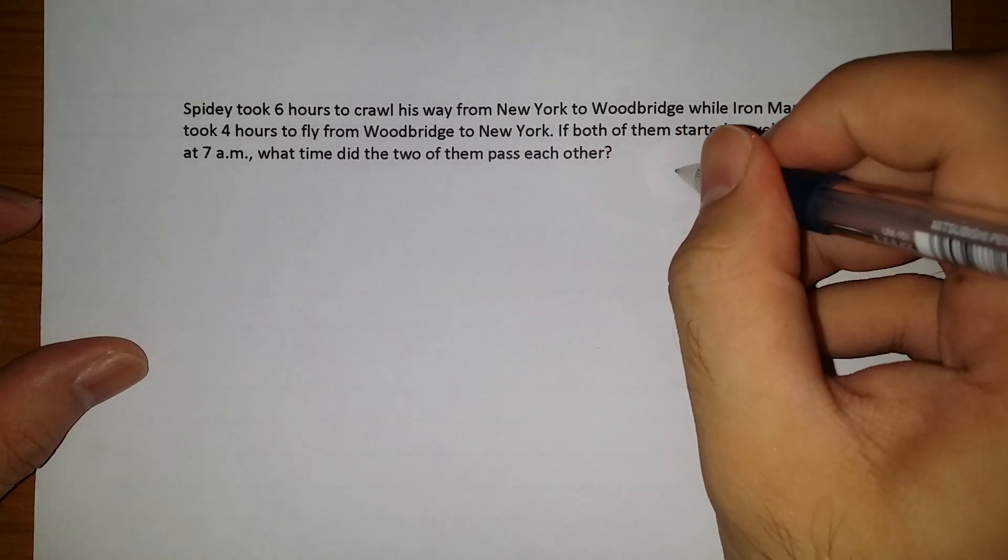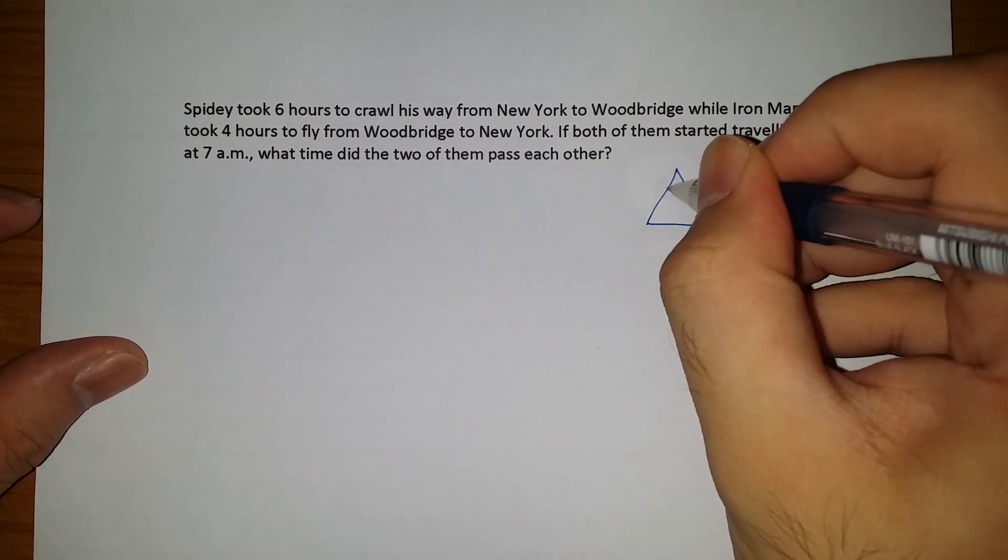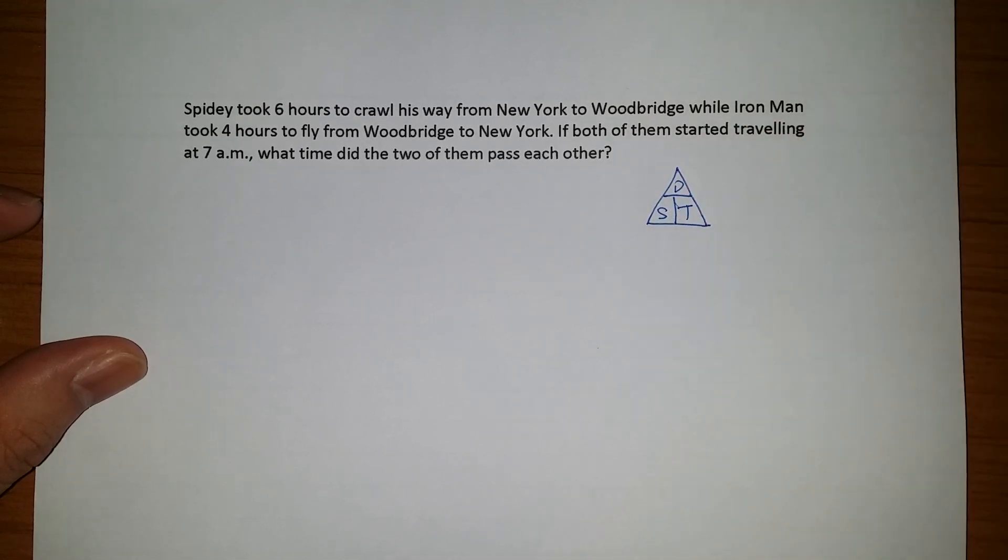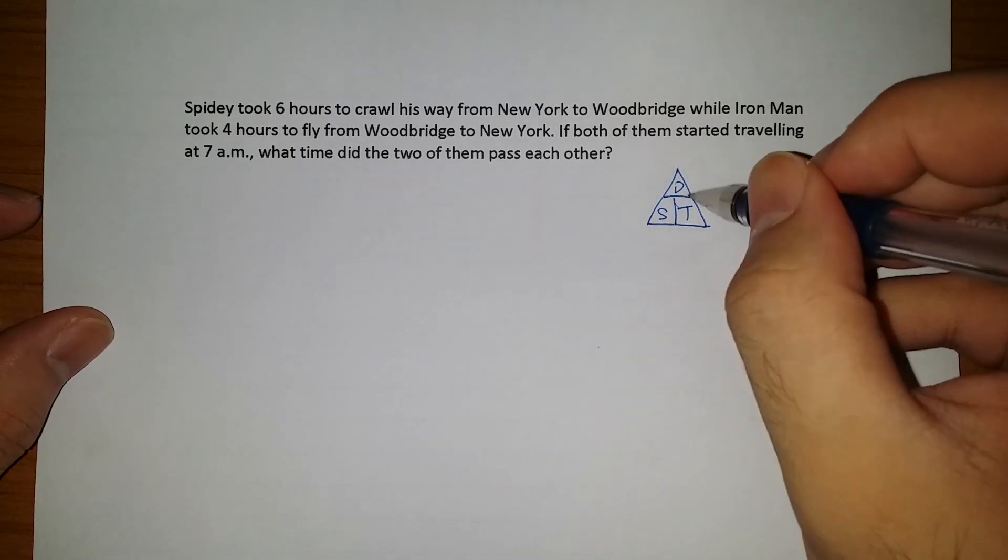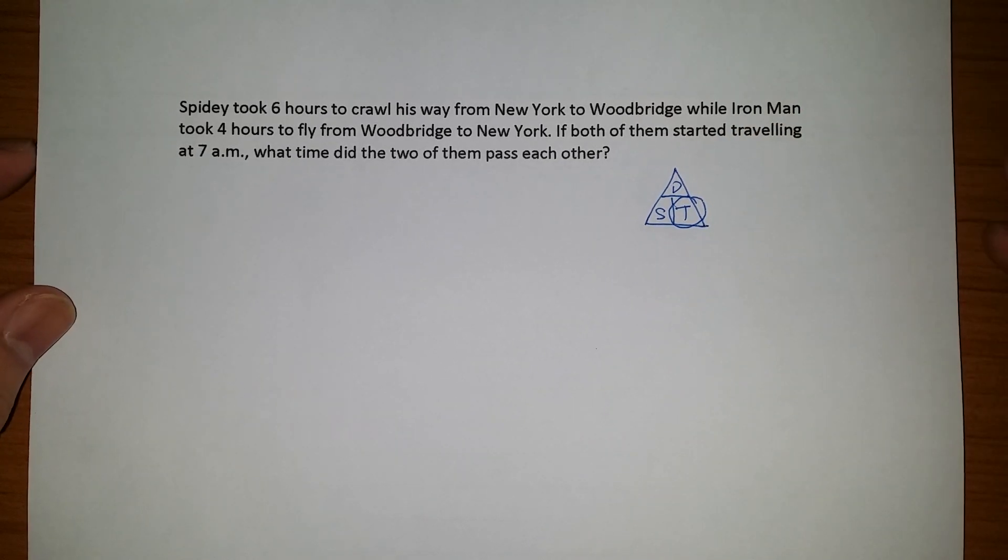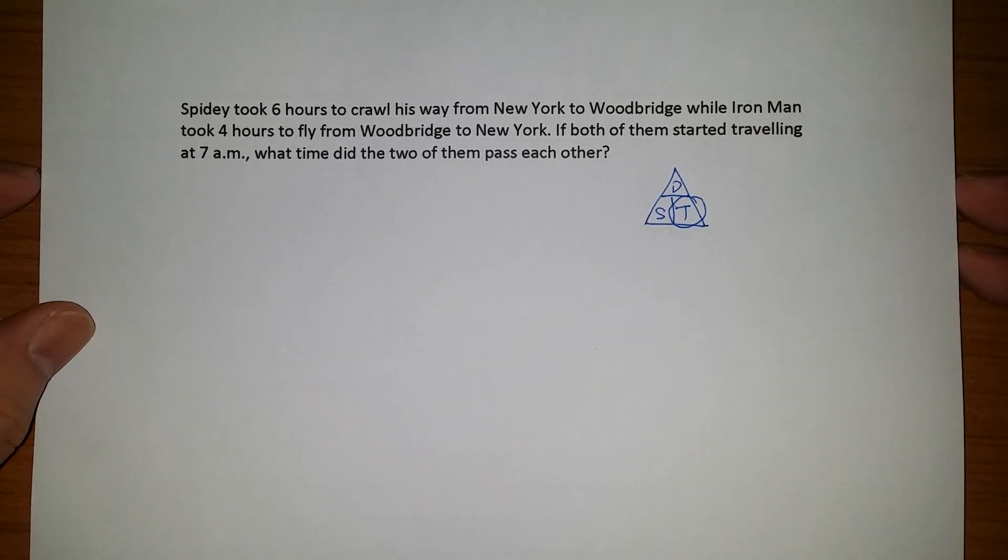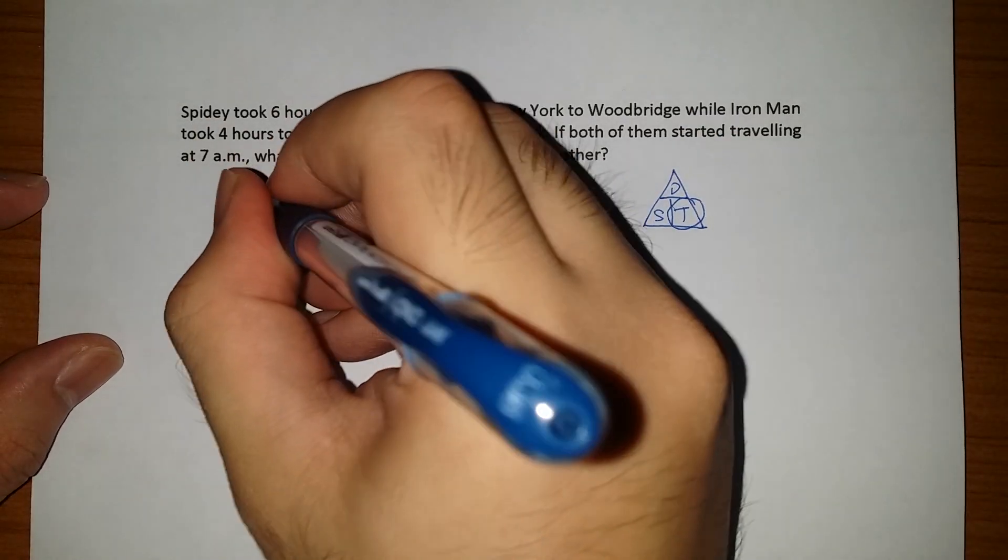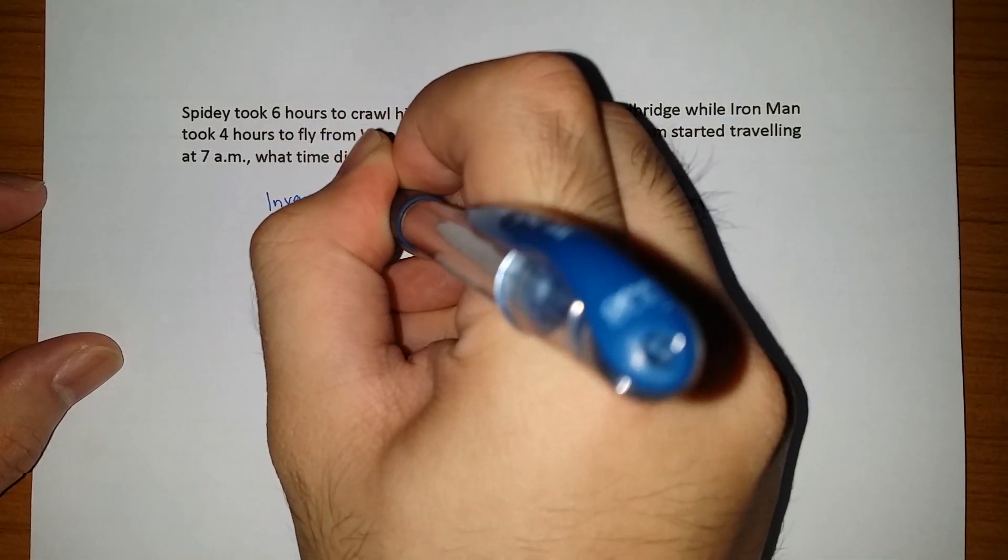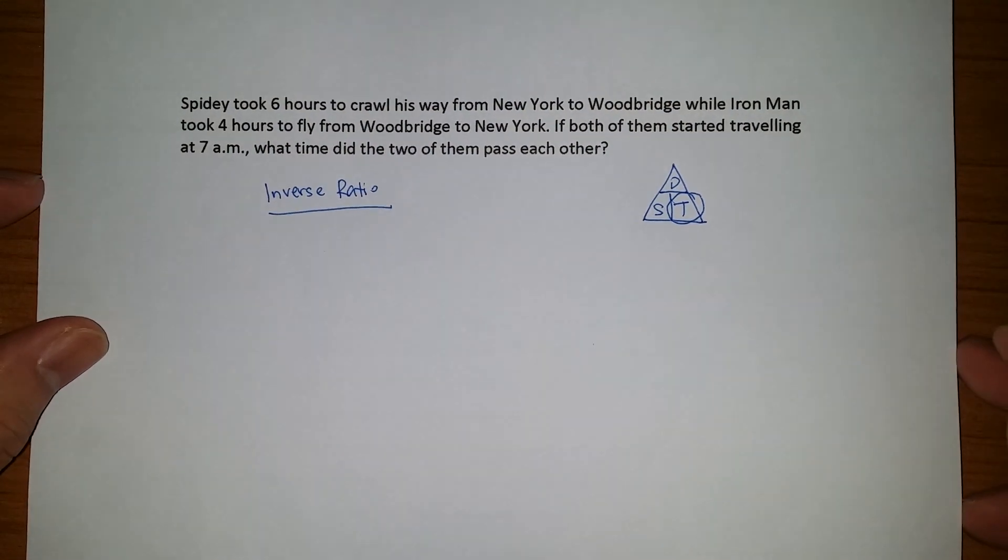So over here, we know that this question falls under the topic of speed. So relying on the DST triangle, we have a big problem here because we only have the time taken, but we don't have the distance and speed. So how do we proceed on from here? So this is one of the concept that I will use is inverse ratio.